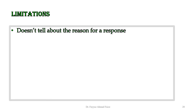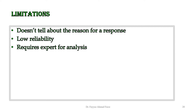Limitations of rating scale: number one, it doesn't tell about the reasons for a response. A respondent only tells you how much they agree or their level of satisfaction on a scale of 1 to 10 or 1 to 7 — the deeper reasons are not explored. It has low reliability because people can respond very randomly and haphazardly, and we do not know the exact preferences or perception of a person. Its analysis also requires expert statistical knowledge.